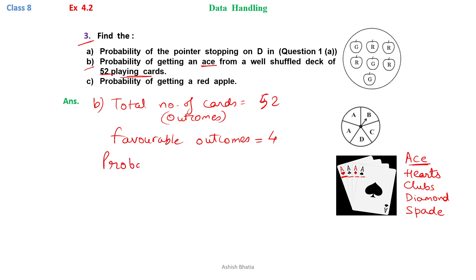So the probability of getting an ace equals favorable outcomes divided by total outcomes, which is 4/52. Since 4 goes into 4 once and 4 goes into 52 thirteen times, the probability is 1/13.